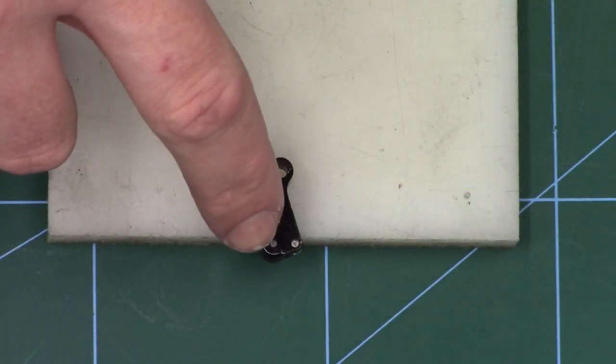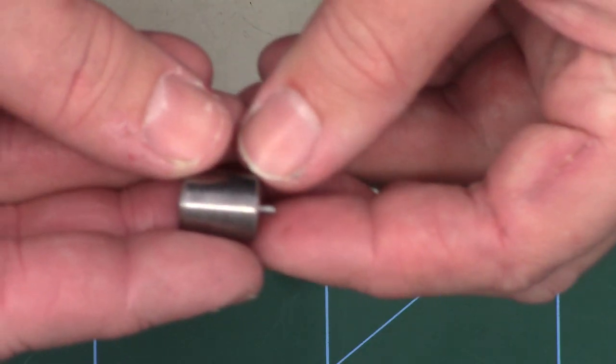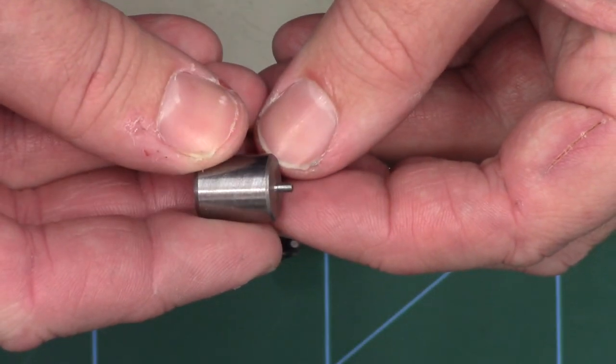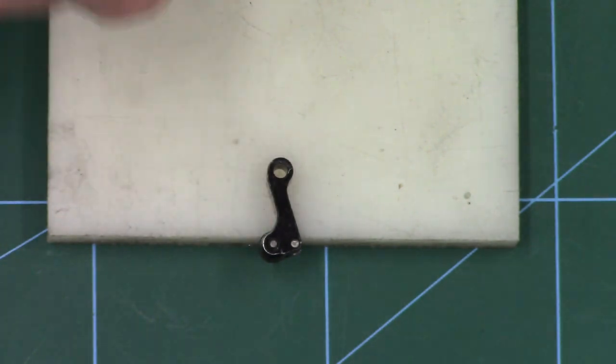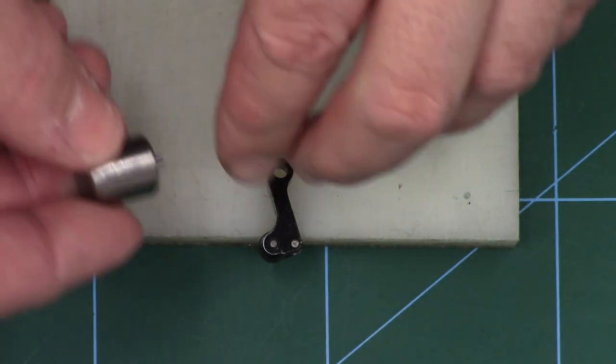Next we need to get out this little pin here. So to do that I've made myself a little punch up, although if you were stuck you could just use a 1.5mm Allen key. They're not normally that tight.